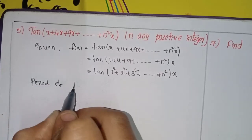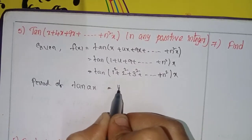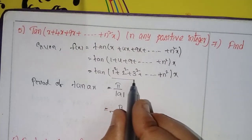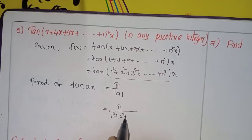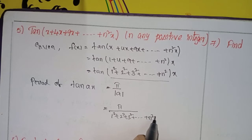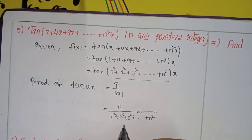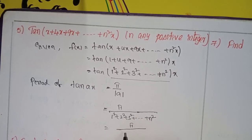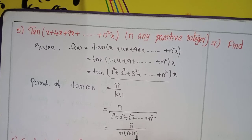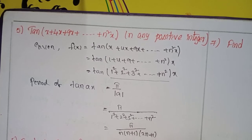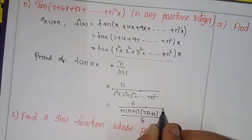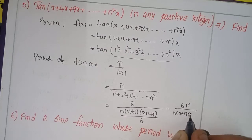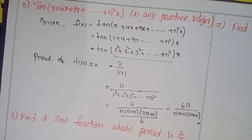The period of tan(ax) equals π by modulus of a. Here a means 1² + 2² + 3² + ... + n², which is the sum of squares of the first n natural numbers. Using the formula, this equals n(n+1)(2n+1)/6. So the period is π divided by that, which equals 6π / [n(n+1)(2n+1)].